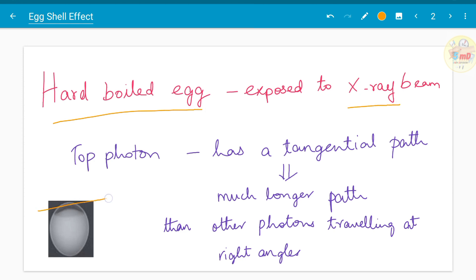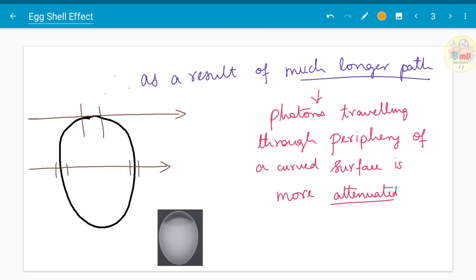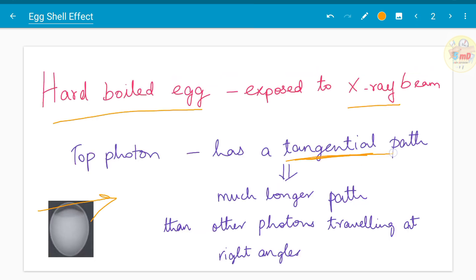The top photon actually travels through a tangential path. Tangent is something which touches the curved surface but does not intersect at any point. So when it has a tangential path, obviously it has a much longer path than other photons which hit through the right angle.